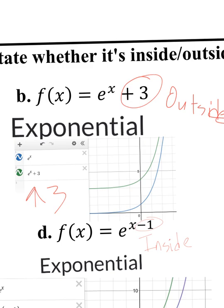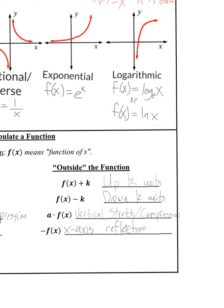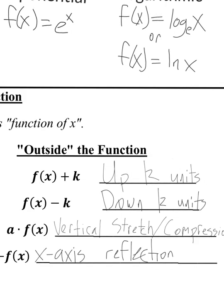So if minusing 2 on the outside made it go down 2, and adding 3 on the outside made it go up 3, let's write a rule: if you plus some number k on the outside, it'll go up k units. If you minus a number on the outside, it'll go down whatever k is.